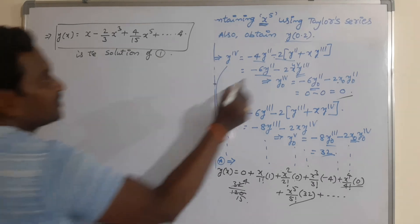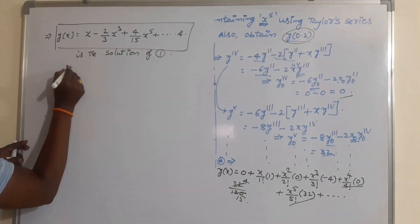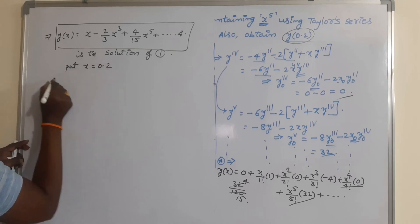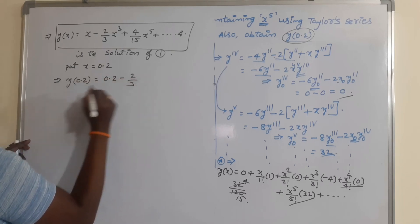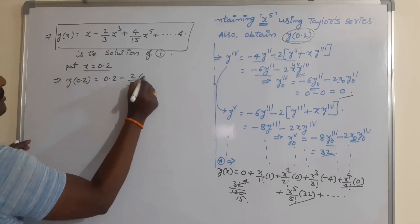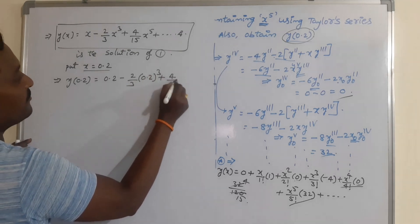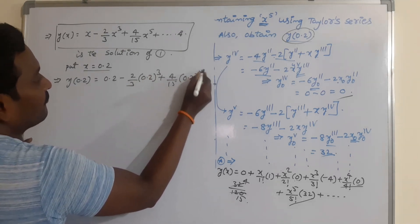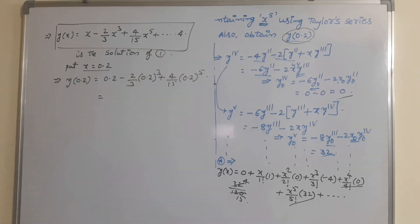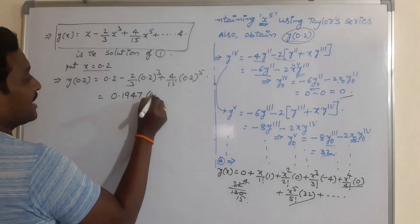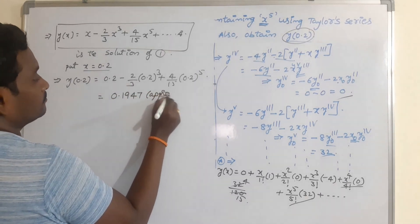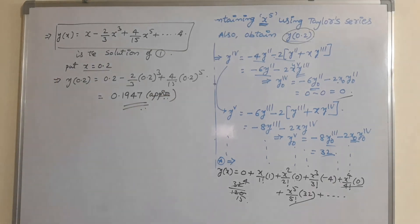After that, we have to estimate the value of y(0.2). Put x = 0.2 in the above solution: y(0.2) = 0.2 minus (2/3)(0.2)³ + (4/15)(0.2)⁵. Using a scientific calculator, you will get the answer approximately 0.1947. You can check this on your scientific calculator. Thank you.